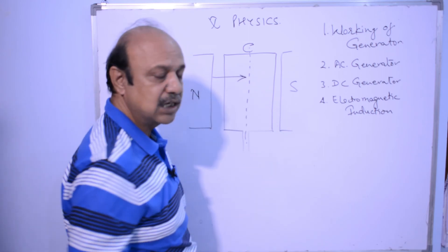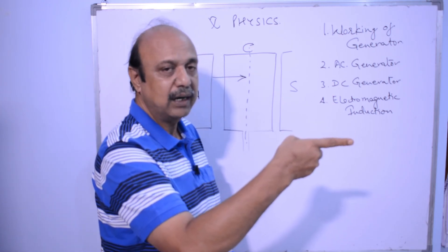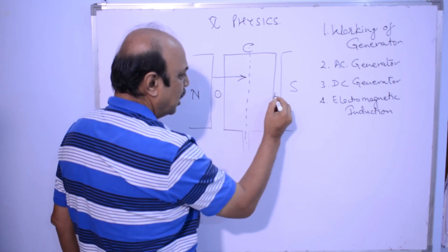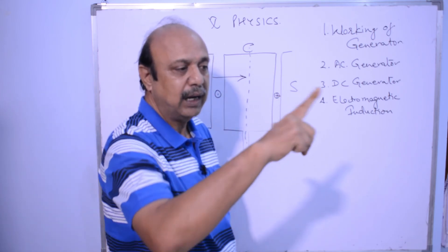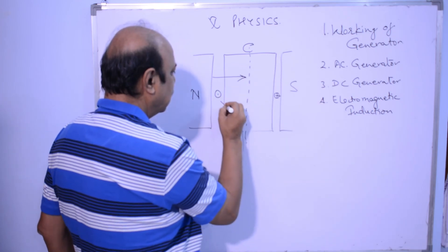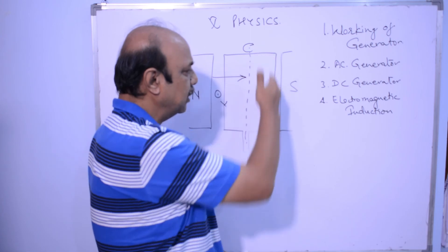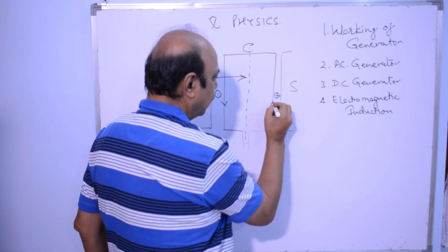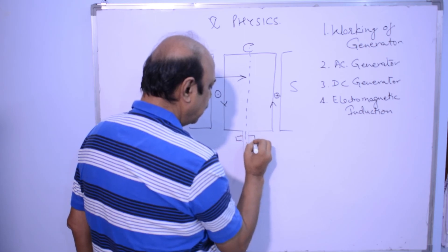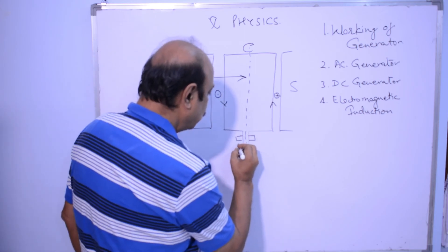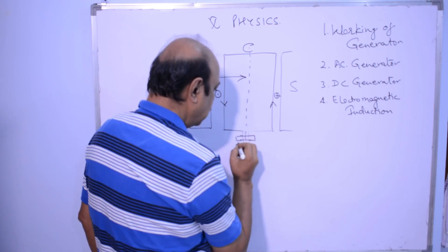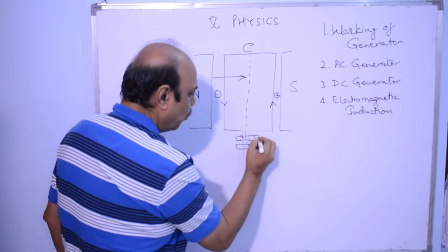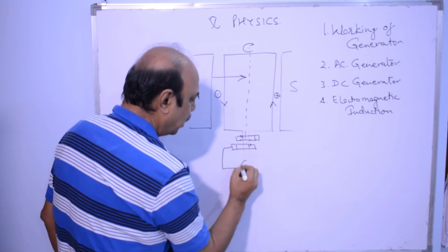My magnetic field is in this direction. If I use my right-hand rule, the mechanical force here is inward and here is outward. So, current is flowing downwards on this side and upwards on the other side. Now, instead of a single slip ring, I use two slip rings. I connect this conductor to this slip ring and this conductor to the other slip ring, put carbon brush C here and carbon brush D here, and connect a galvanometer.